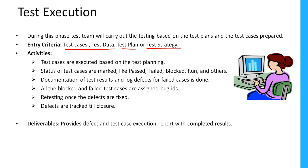What are the different activities we do as part of test execution? Test cases are executed based on the test planning. Test planning contains what to test, how to test, and when to test. Based upon these three criteria we have to execute our test cases. The status of the test cases are marked as pass, fail, blocked, or other statuses.